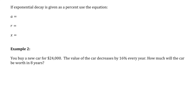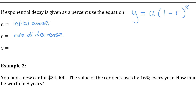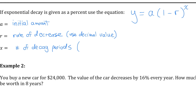Now let's do one where the exponential decay rate is given as a percent instead of a multiplication factor. When given the decay rate as a percent, we use the formula y equals a times (1 minus r) to the power of x. Here a is still the initial amount, r is the rate of decrease as a decimal — divide the percentage by 100 — and x is the number of decay periods, which you can still calculate as total time divided by time of one decay period.